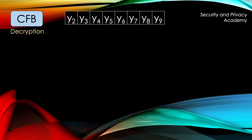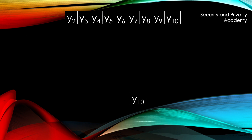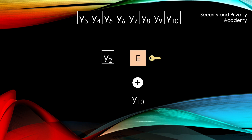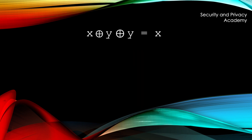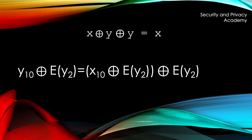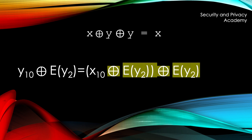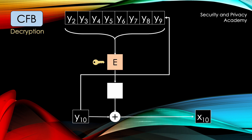We now move over to decryption. The byte Y10 now arrives at the receiver. Note that we use the same 64-bit shift register as before. Before anything happens, the new byte Y10 gets added to the register. Then, for simplicity, we just say that Y2 drops out of the register and gets XORed with Y10 to yield the original X10. Why is this the original X10? XORing Y10 with the encrypted Y2 equals X10 XORed with the encryption of Y2. Since we XORed the encryption of Y2 twice, the result is X10. Here again, the schematic illustration of the algorithm.